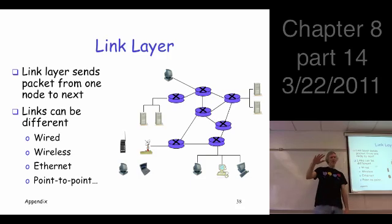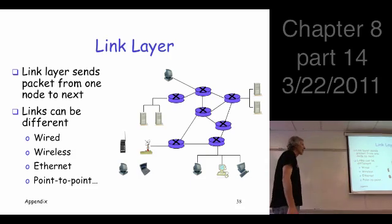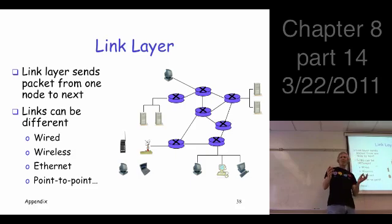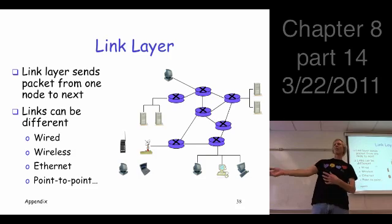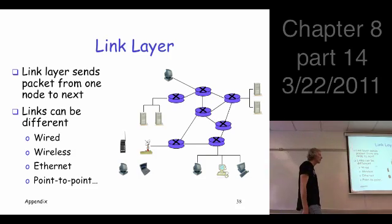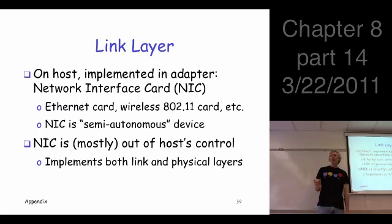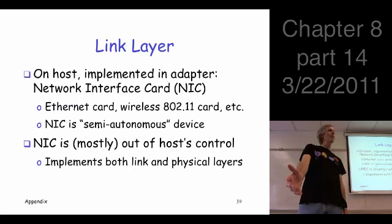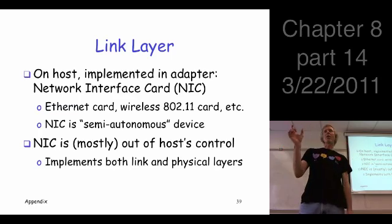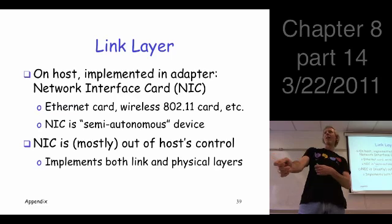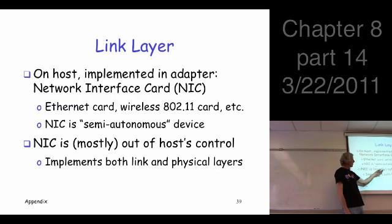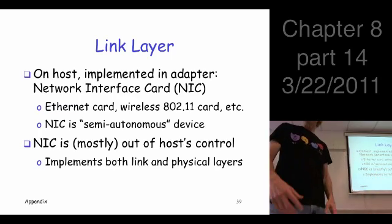Okay, next layer down — we're done with the network layer. Down at the link layer, things get really cluttered. Lots of different things could be happening on different links: one link could be wireless, another using a point-to-point protocol, another using Ethernet. The stuff that happens at the link layer happens really out of control of even your operating system — it's in your network interface card. It's got its own computing resources; it's a semi-autonomous device that does its own thing.